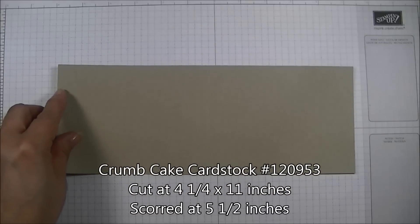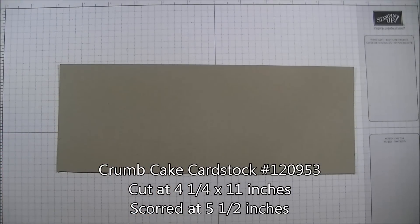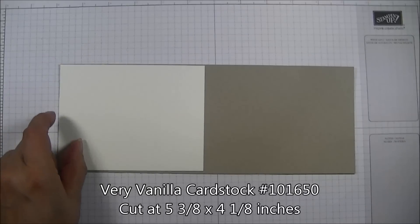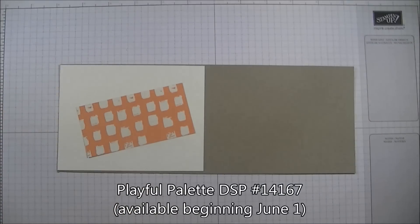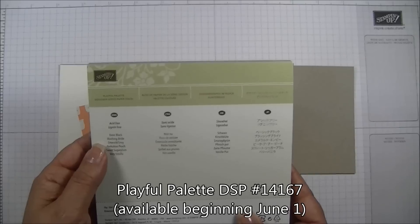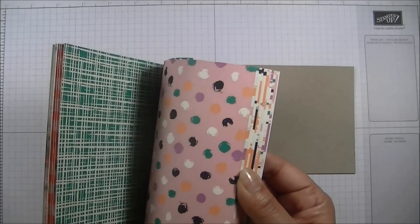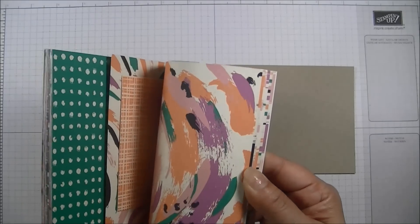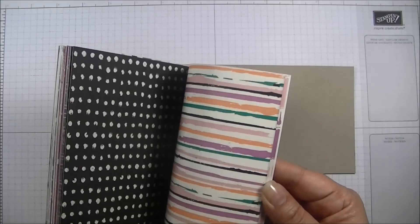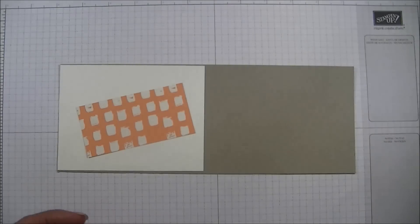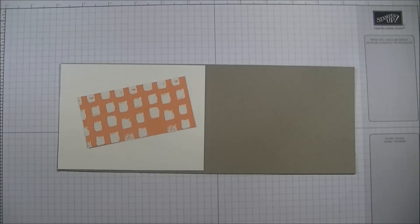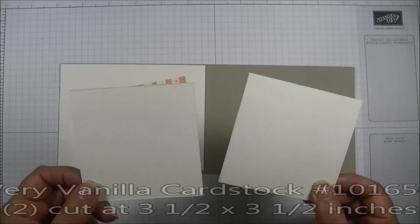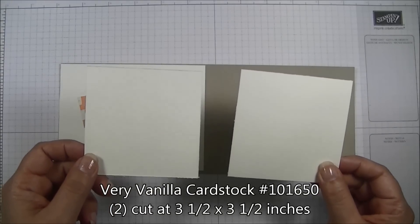For our paper, I have my card base here in crumb cake cut at 4.25 by 11 inches, scored at 5.5. My card front in very vanilla cut at 5.3 by 4.8. I have a piece here from the Playful Palette Designer Series Paper Stack. This is a lovely paper stack. It has so many wonderful designs. It is two sided and it is awesome. We are going to be using this piece here, cut at 2 inches by 4.8. Then I have two pieces of very vanilla cut at 3 by 3 inches for our butterflies.